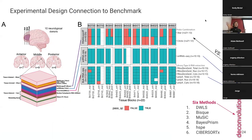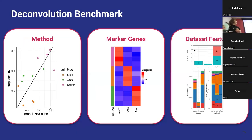Backing up to look at this dataset all together again — we have these three different data types that are matched. How are they going to plug into our deconvolution benchmark? We have our six methods to test, our six different types of bulk RNA-seq as input, our paired single nucleus data as the reference dataset, and when we calculate the proportions, we're going to compare them back to our RNA scope immunofluorescence dataset. Then the outline for the rest of the results: first method results, then marker gene selection, then what happens when you change dataset features.